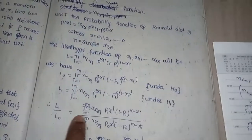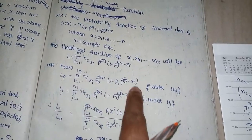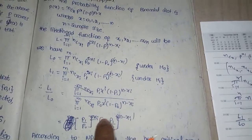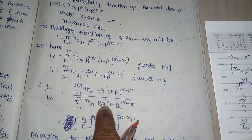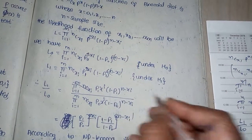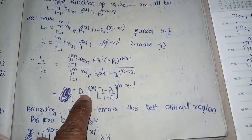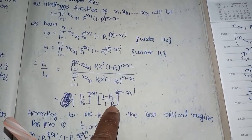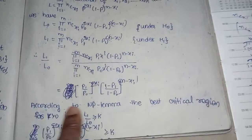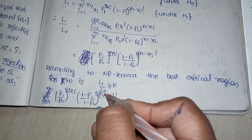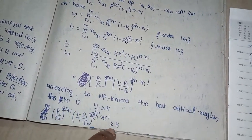Then L1/L0 equals pi from i=1 to M of NCX_i. Substituting L0 and L1, the pi NCX_i terms cancel. The remaining term is: (P1/P0)^(summation X_i) * ((1-P1)/(1-P0))^(summation(N-X_i)). According to NP Lemma, the best critical region for K > 0 is L1/L0 >= K.